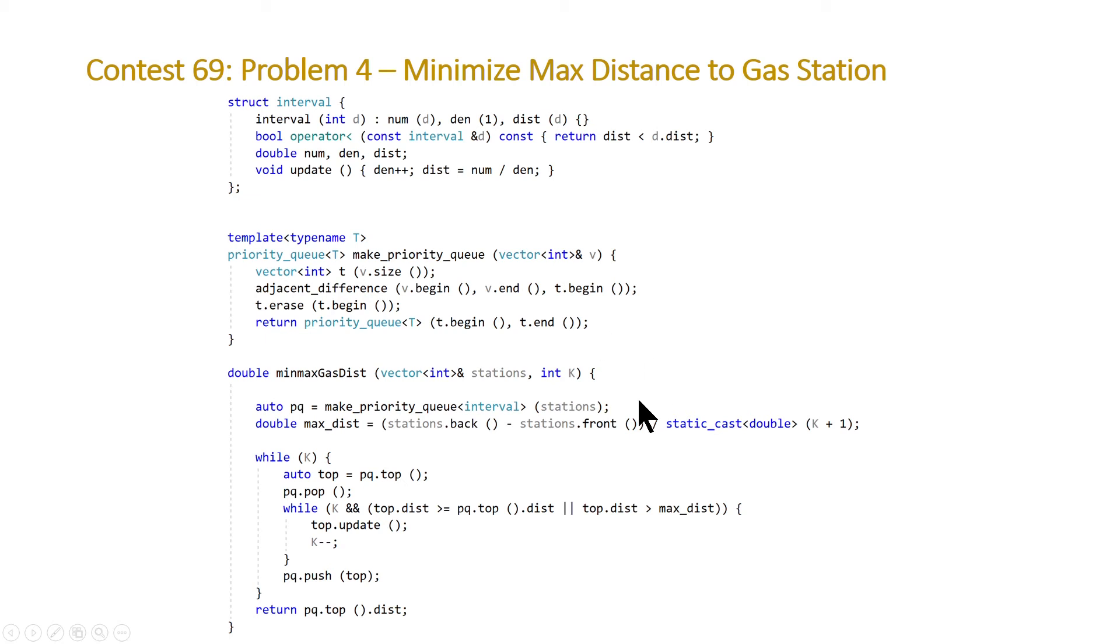So at this point we have our priority queue. We're going to skip this line, come back to it because it's an optimization. And at that point, our code is pretty simple. We're just going to loop through, so while k, so while we still have gas stations to add, we are going to grab the top interval. So that's the interval with the highest distance. So in our example, it would be equal to the interval that had the distance equal to 5. Top does not pop that from the priority queue, so we have to do that afterwards. And then we're saying while we still have gas stations to add and while the distance of that top interval is greater or equal to the next top interval, keep on adding gas stations and decrement the number of gas stations that we have to add.